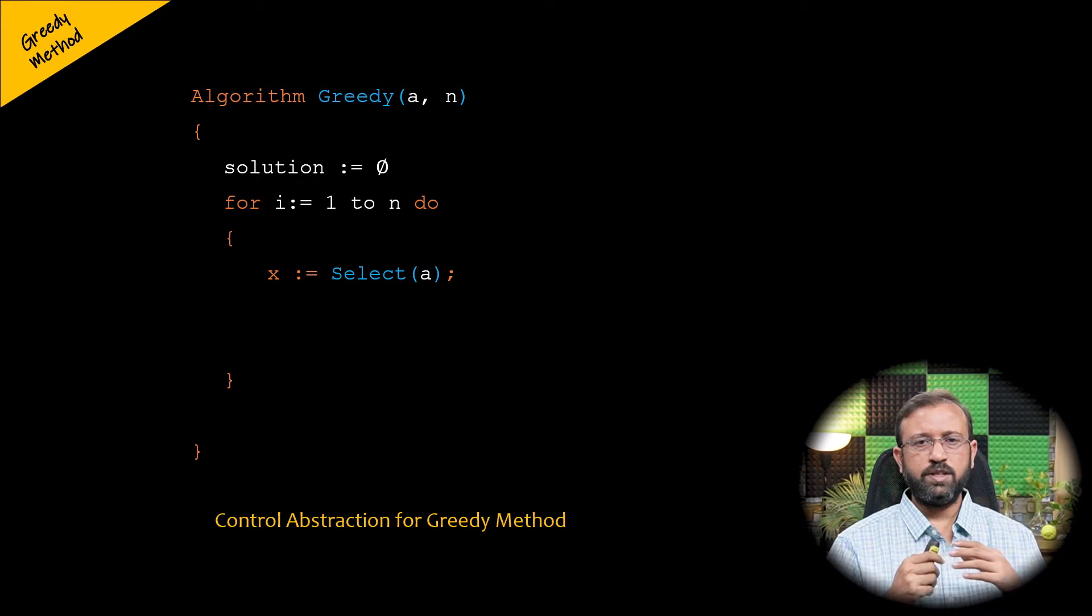Then we will check if the solution x is feasible using the feasible function. The feasible function is a boolean function and will return true if solution x is feasible. Otherwise the feasible function will return false.